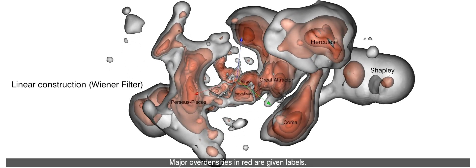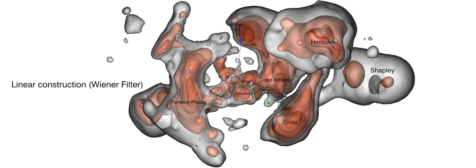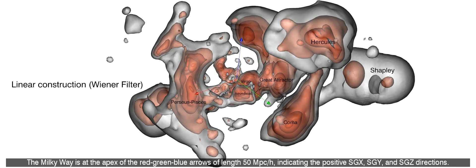Major over densities in red are given labels. The Milky Way is at the apex of the red green blue arrows of length 50 megaparsec over h, indicating the positive SGX, SGY, and SGZ directions.